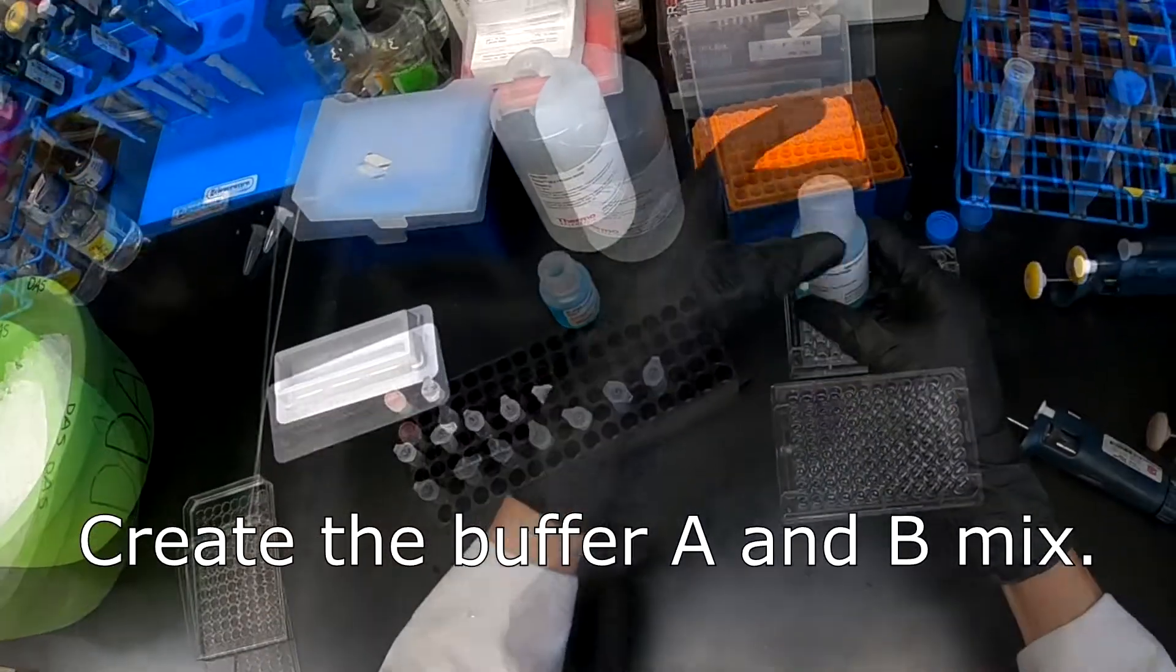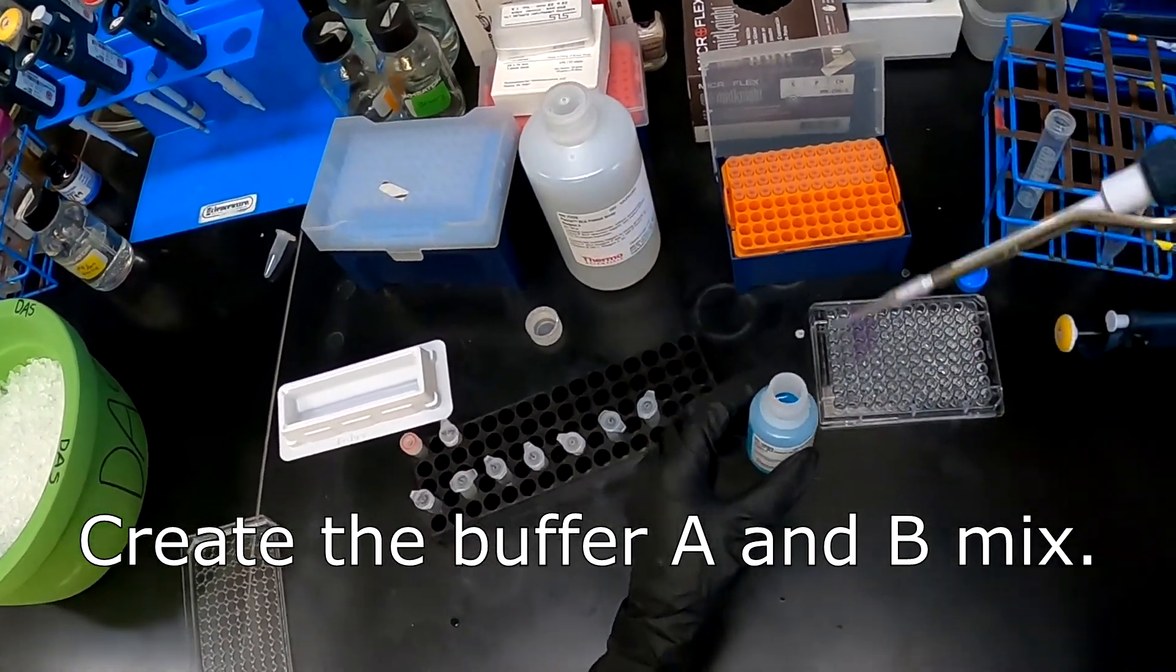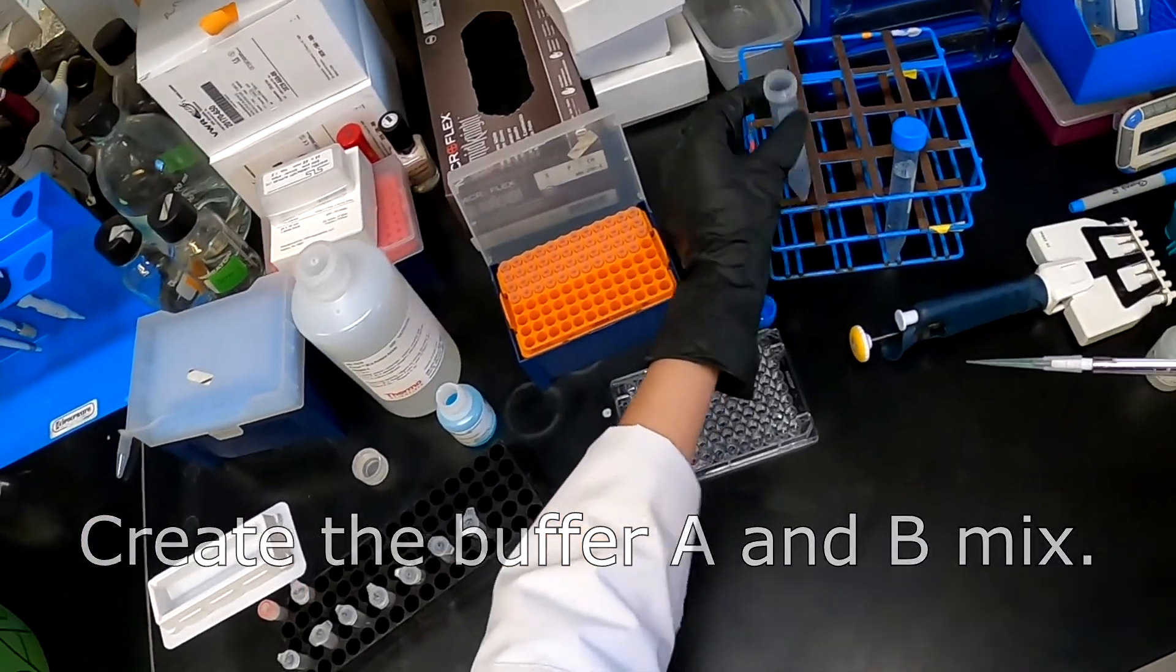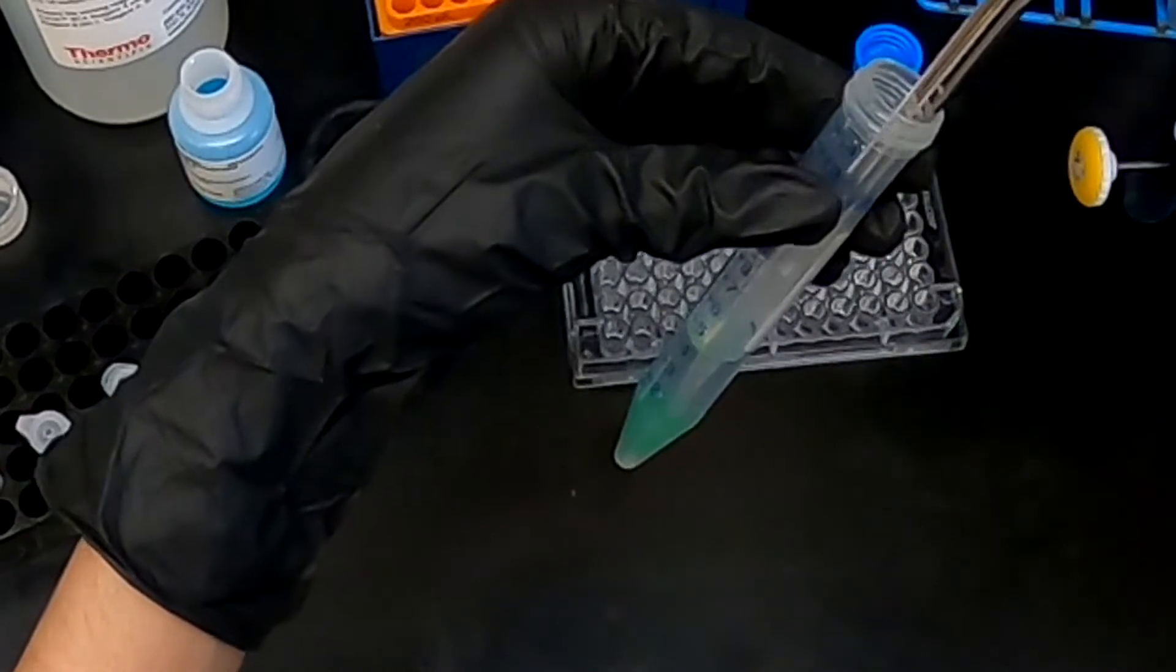The working reagent has to be mixed in order for it to be usable. It consists of a 50 to 1 dilution of buffer A and B. 200 microliters of this working solution will then be placed into each well of the plate.